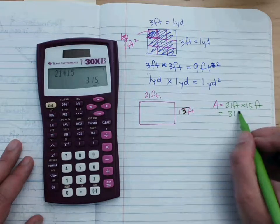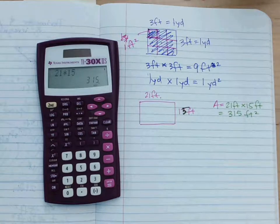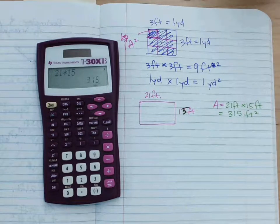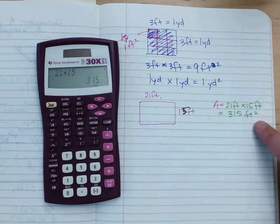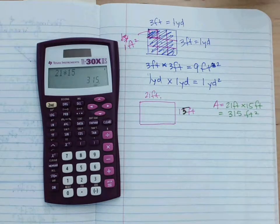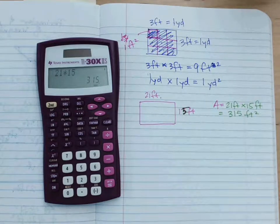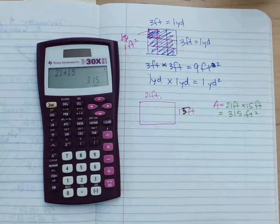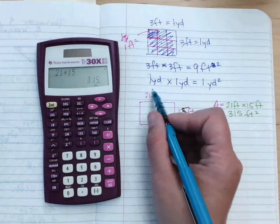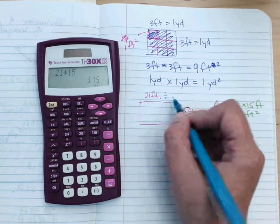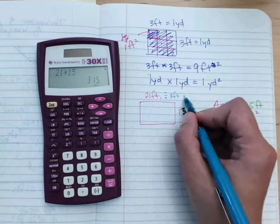21 times 15, 315 feet squared. Now, if I want to figure out how many square yards that is, what could I do to translate this into square yards? What are your thoughts on that? I didn't hear exactly. Divide by three. Interesting. If I change this to yards, don't I divide this one by three? This will give me yards, right?